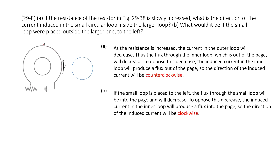Can you determine the current inside this larger loop? Yes. Use the right-hand rule. So we curl the four fingers of our right hand anti-clockwise and then our thumb points out. So that means inside, the magnetic field is pointing out.